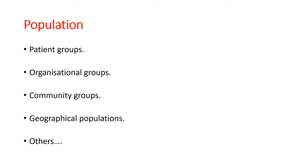The word 'population' must make sense to the users of services, providers of services, commissioners of services and policy makers, and can be interpreted in at least four different ways. All are relevant to population health management, and it is essential that the population under consideration is clearly defined. First, there are patient groups, which are populations that make clinical sense — typically a group of individuals receiving care within the health system, for example patients with liver disease. Then there are organisational groups, which are patients attending a particular hospital, clinic, primary care centre, or even children attending a particular school.